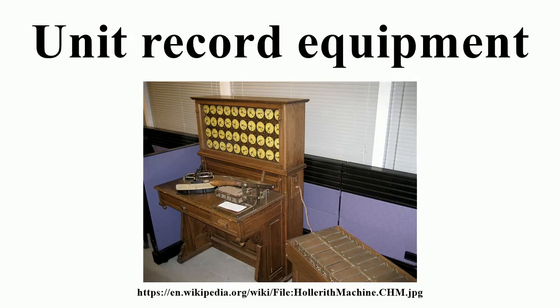The operation of tabulators and many other types of unit record equipment was directed by a control panel. The panels had a rectangular array of holes called hubs which were organized into groups. Wires with metal ferrules at each end were placed in the hubs to make connections; for example, the output from some card column positions might connect to a tabulating machine's counter. A shop would typically have separate control panels for each task a machine was used for. Note: control panel wiring is sometimes referred to as programming; however, that term applies only to the control panels of calculators, such as the IBM 602 and IBM 604, that specified a sequence of operations.